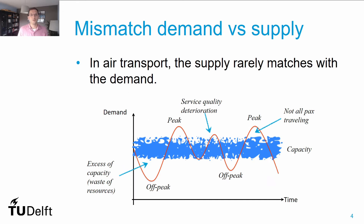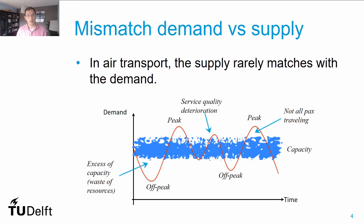Besides this, demand for airlines fluctuates a lot — it fluctuates per time of day, per day of the week, and per month. Even across different months, there are different levels of demand. Because this fluctuation can be quite high and capacity is usually fixed within some limits, it happens that sometimes the airline has excess capacity, so resources are wasted because aircraft are flying nearly empty. In other cases, you are working at the limits, leading to service quality deterioration, or you have passengers left on the ground who would like to fly with you but can't because you don't have enough capacity.